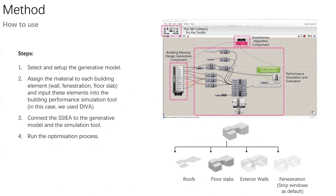The last feature of this toolkit is that it is easy to use. The purpose of developing this toolkit is to facilitate architects who usually have no prior knowledge about parametric design and computational design optimization. There are only four steps to run the optimization process. The first step is to select and set up the generative model. The second step is to connect the generative model to the simulation tool. The third step is to connect the optimization algorithm to the generative model and the simulation tool. The fourth step is to click the button and let the computer run the optimization and get the result.